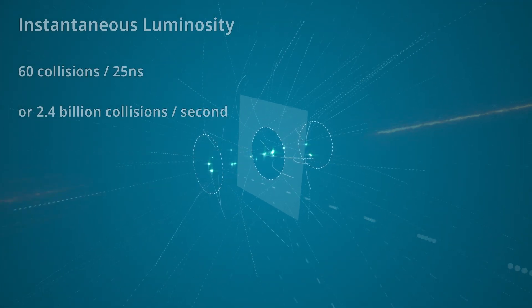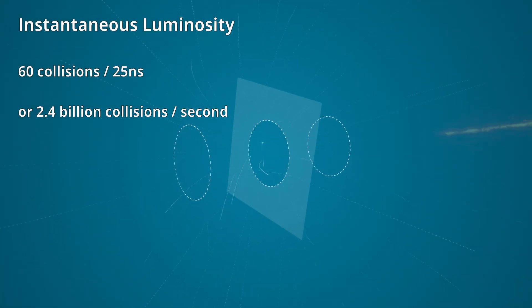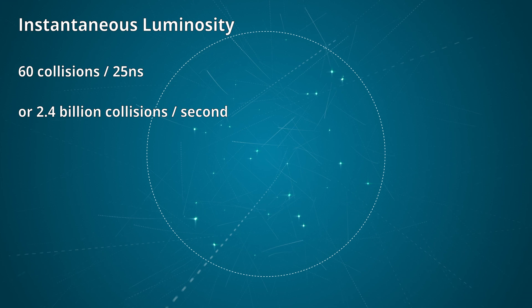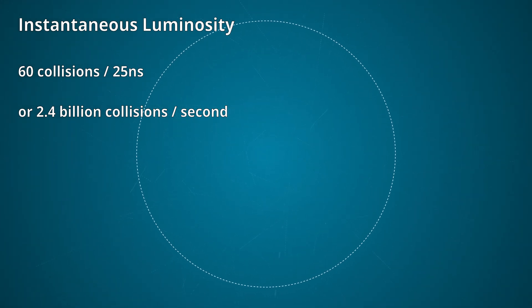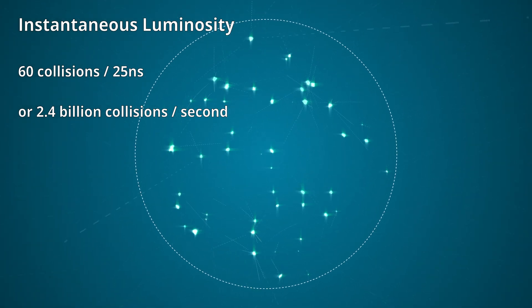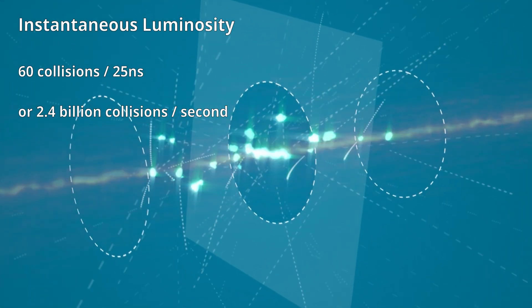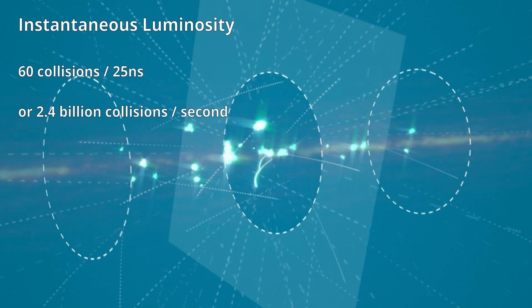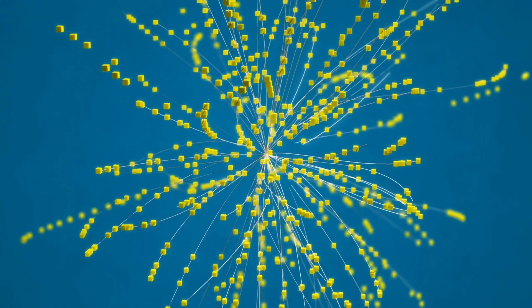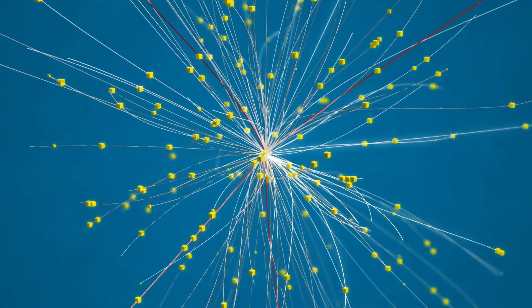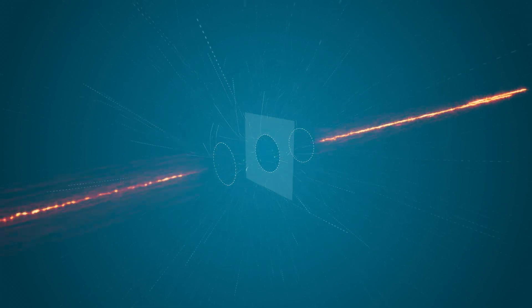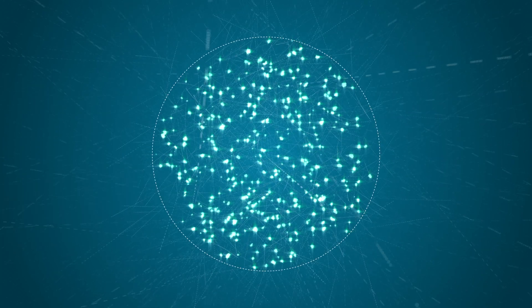The instantaneous luminosity indicates how many protons pass per second and per surface area at the point where the beams intersect. Instantaneous luminosity is a measure of the intensity of possible particle collisions at the LHC and is crucial for researchers to find new particles such as the Higgs boson. The more protons there are in the beam, the greater the instantaneous luminosity will be.